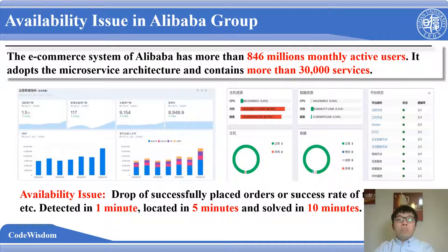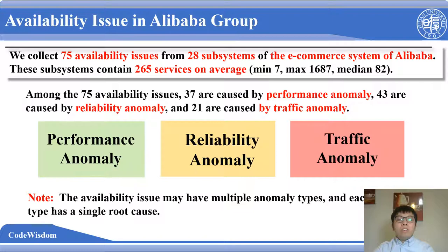When an availability issue is detected, its root cause and anomaly type need to be located in a short time. We collected 75 availability issues from 22 subsystems of the e-commerce system. We found that the availability issue can be divided into three types: the performance anomaly, the reliability anomaly, and the traffic anomaly. We also found that an availability issue can be caused by different types of anomalies, each of which is indicated by a set of metrics.